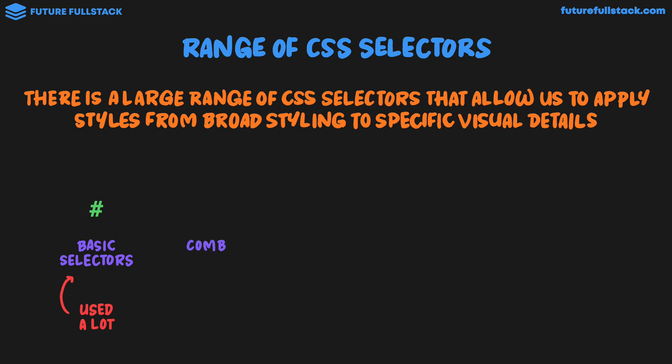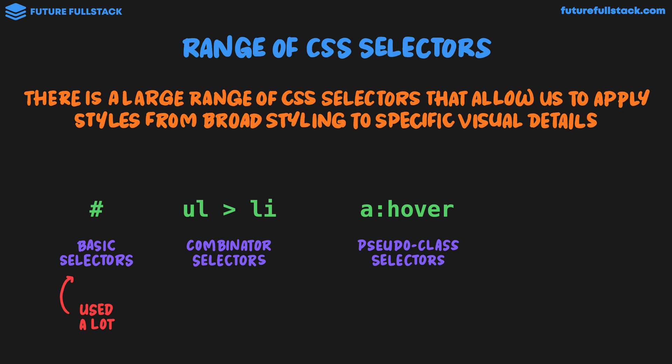Next up we have Combinator Selectors. This is where the selector is defined by combining two different types of selectors. We'll also be looking at this selector later on. Next up are Pseudo-Class Selectors. These type of selectors apply when a different state or condition is met. For example, hovering over an anchor tag. They're really important and we will be discussing them in a few videos' time.